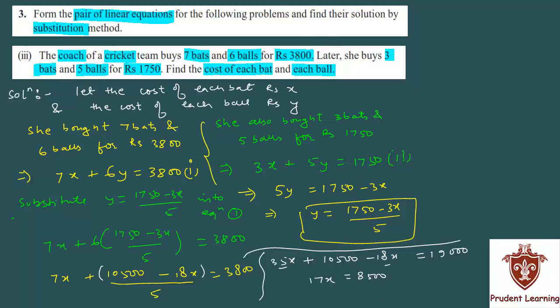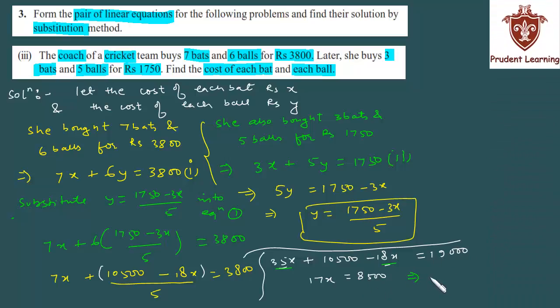Now, 35x minus 18x gives 17x, and 10500 will subtract from 19000, so you get 8500. Finally, x equals 8500 over 17, which gives us x as 500. So the cost of each bat is Rs. 500.